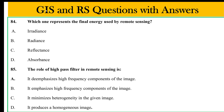The remote sensing image is the effect of the remote sensing. The options are: radiance, C. reflectance, D. absorbance. The remote sensing image effect is reflectance. Reflectance is the effect of the remote sensing image.